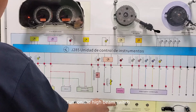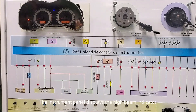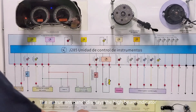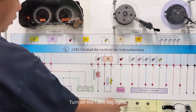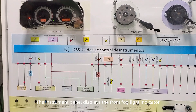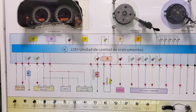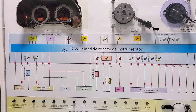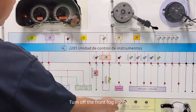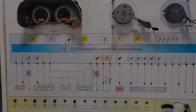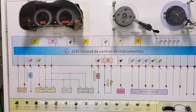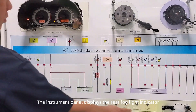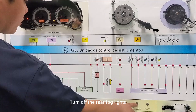Turn on the high beam switch — the instrument panel displays the high beam indicator. Turn off the high beam. Turn on the front fog lights — the instrument panel displays the front fog light indicator. Turn off the front fog lights. Turn on the rear fog lights — the instrument panel displays the rear fog light indicator. Turn off the rear fog lights.